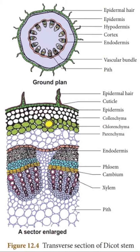The amount of xylem is higher in the leaf trace compared to the vascular bundles of the stem. As the leaf trace bundle moves forward, its size increases and it eventually enters the leaf at the node.